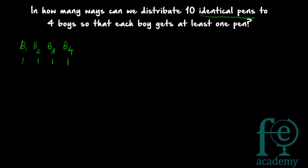Since the pens are identical, it doesn't matter which specific pen is given to which boy — all the pens are identical, there is no difference between the 1st, 2nd, or 3rd pen. So we distribute 1 pen each to all 4 boys. Then 6 pens are remaining. Our challenge now reduces to distributing these 6 identical pens among 4 boys.